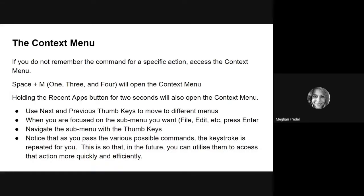You can navigate the context menu by using the next and previous thumb keys to move around to the different menus, and when you find the sub-menu that you want, press Enter. If you need to go deeper into a sub-menu, again navigate with your thumb keys. As you move through various commands, the keystroke will be spoken out loud for you so you can use those keystrokes in the future to access the action more quickly.